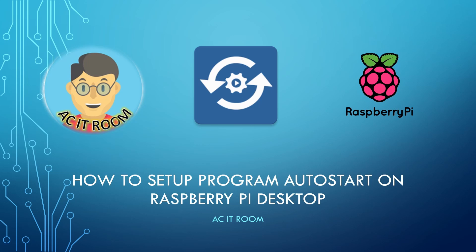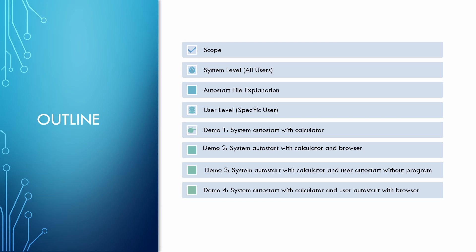Let us go to the outline page for the overview of this video. In this outline, first of all, four types of auto-start methods will be shown in the scope page. Then system level auto-start setting and auto-start file will be covered. After that, user level auto-start setting will be discussed. Finally, four demo movies will play.